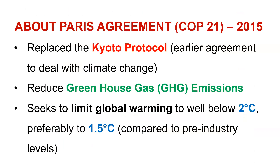This CCPI is about assessing countries' progress towards achieving Paris Agreement goals. The Paris Agreement was agreed upon at the 21st Conference of Parties, COP21, in 2015, which happened in Paris — that is why it is named the Paris Agreement. Before the Paris Agreement came into effect, there was another protocol called the Kyoto Protocol. Paris Agreement came as a replacement for the Kyoto Protocol. The Kyoto Protocol also dealt with climate change, and after its commitment period ended, the Paris Agreement was started.